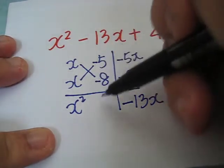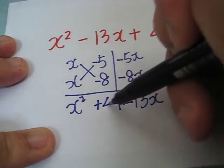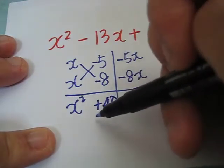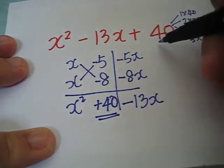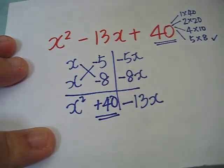Negative 5 times negative 8 will give us positive 40. Let's check. Correct.